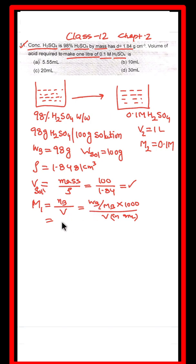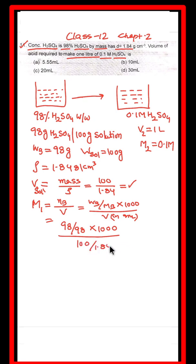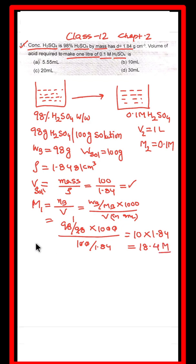So we have: wb = 98, molecular mass = 98, into 1000, divided by volume = 100 divided by 1.84. When you solve this, the 98s cancel, giving 10 × 1.84, which equals 18.4 molar. This is the molarity of the concentrated solution.